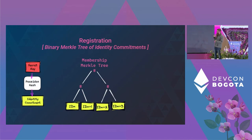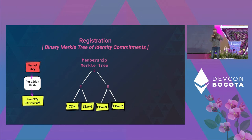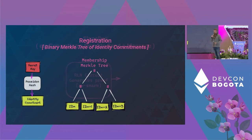The registration process is just the Merkle tree — this is basically what semaphore is. It's just proving you're part of an anonymity set, and this can be done on or off-chain.